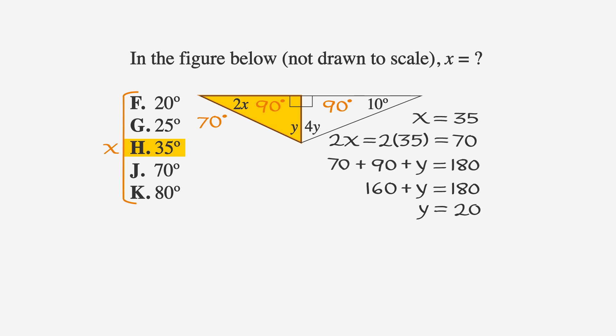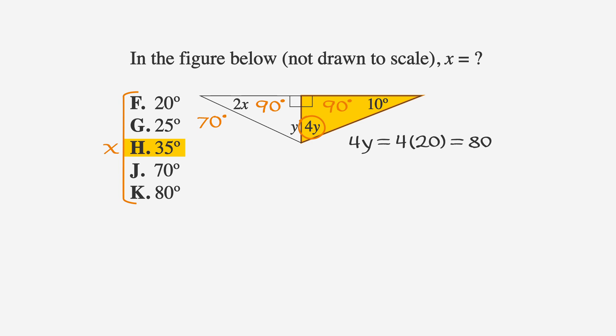Okay, based on that information, we can say that in the next triangle, the angle marked 4y is 4 times 20, or 80 degrees.